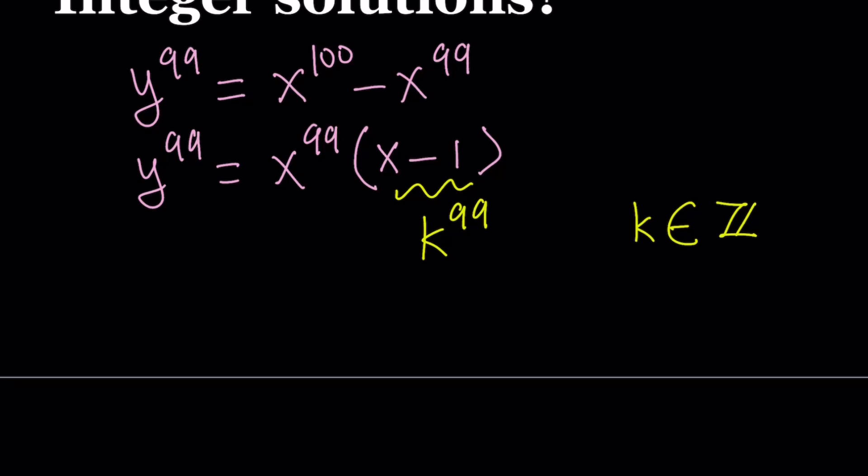Now, notice that we are multiplying two 99th powers. The product is also going to be a 99th power. Don't worry, when we get to solving y, you're going to see that it's actually working. So let's start with x first.